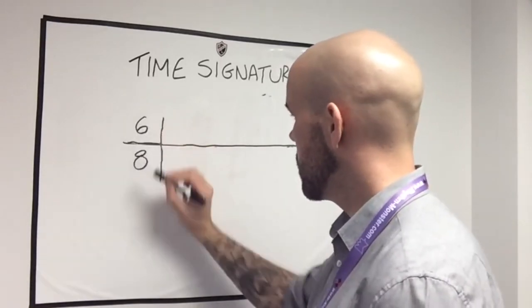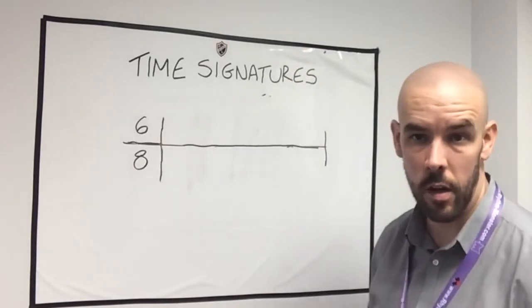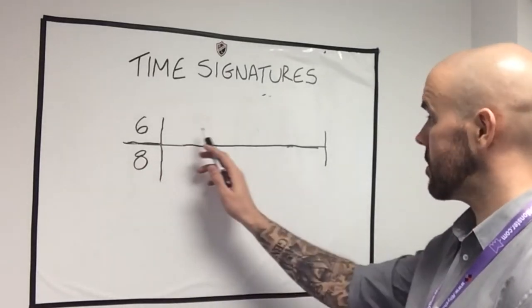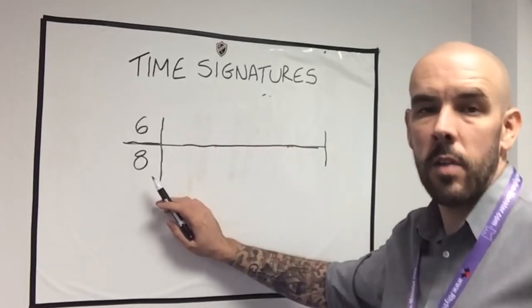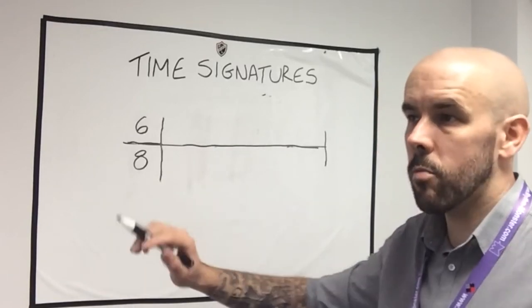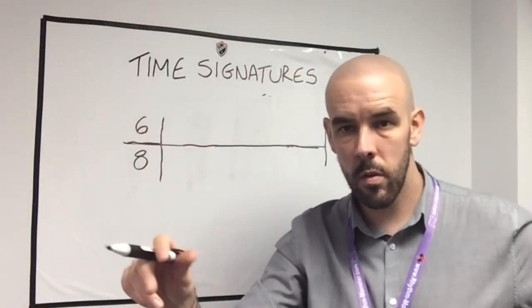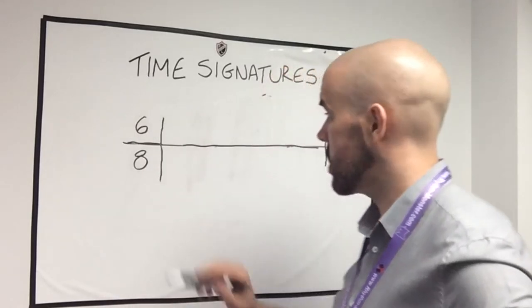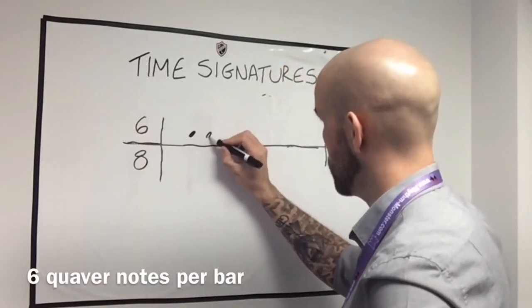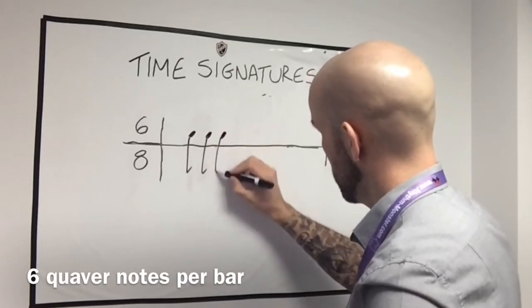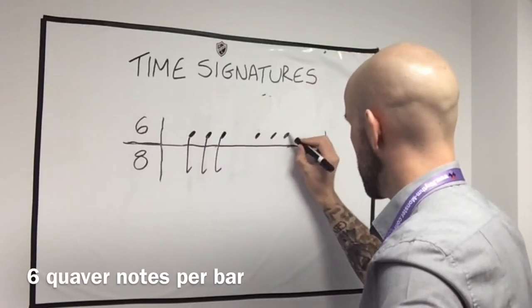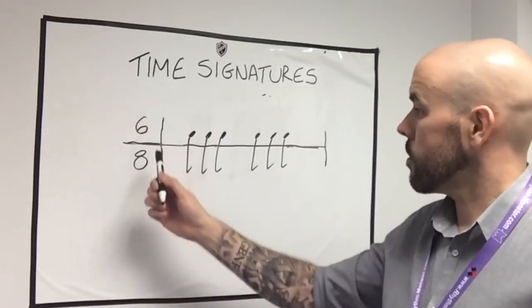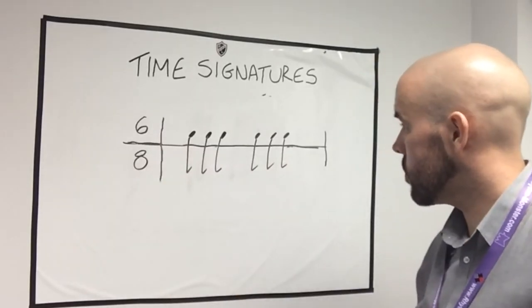So if you see 6-8, you might think: the numbers are six and eight. Thinking back to the duration table — semibreve whole note, minim half note or two, crotchet quarter note or four, and half again is a quaver or eighth note. So it's going to be six quavers per bar. Let's draw that in — one, two, three, four, five, six. So that's what the time signature is telling me: six quaver notes per bar.